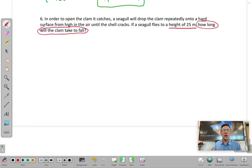But this is asking us for a time. So really the only thing that we know is that the height or the vertical change in position of this clam is going to be 25 meters. And then we know that we are solving for the time that it actually takes for the clam to fall.